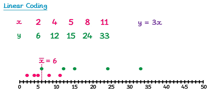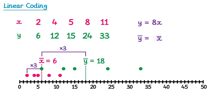So what happens to the mean of this coded data? Well if you work out the mean of the green values, you'll find that y bar is equal to 18. So to get each of the y values, we multiplied the x values by 3, and once again for the mean, to get the new mean you could just multiply the old mean by 3. So the new mean y bar is equal to 3 lots of the old mean x bar. So if you multiply all of the values by 3, you'll simply multiply the mean by 3. It also doesn't matter which value is used — so if we coded by multiplying by 8, the new mean would be 8 times the old mean.